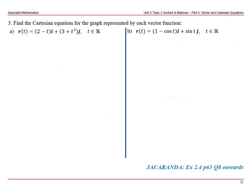Find the Cartesian equation for the graph represented by each vector function. Look at the x and y component. x equals 2 minus t, which we can arrange in terms of t to get t equals 2 minus x. y equals 3 plus t squared, equation 2.